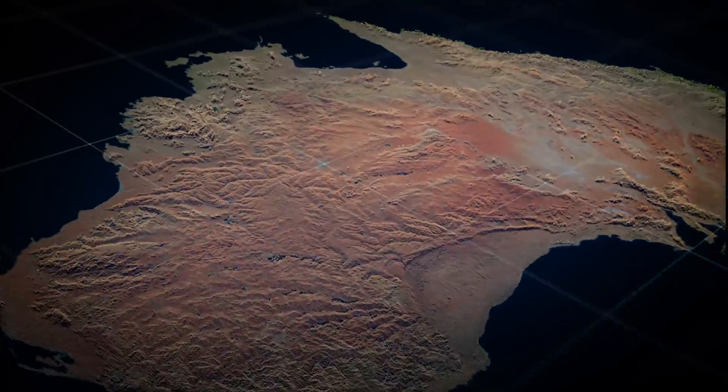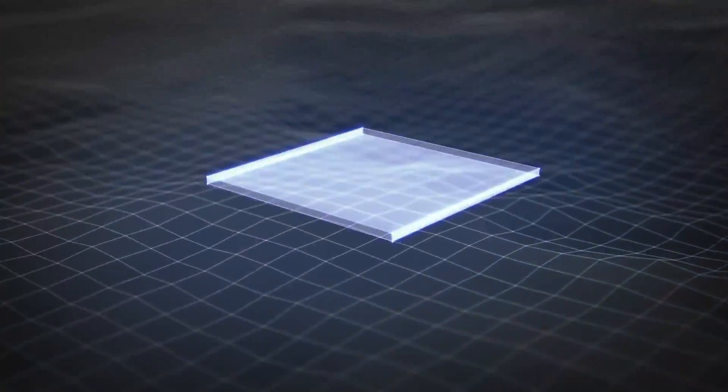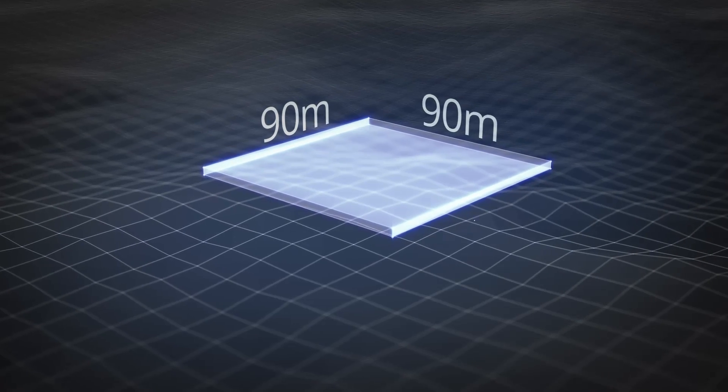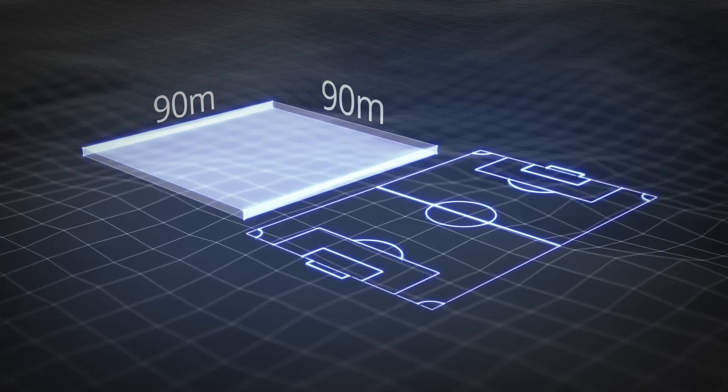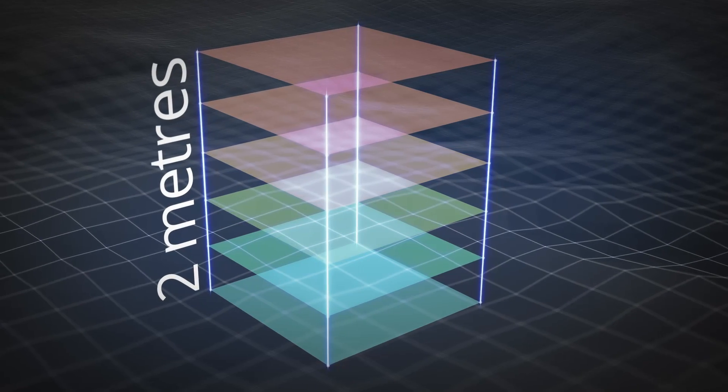The Soil and Landscape Grid of Australia is composed of over 2 billion pixels covering the entire continent. Each pixel represents an area of 90 metres squared, roughly equivalent to a football field, and has six layers of information down to a depth of 2 metres below the surface.